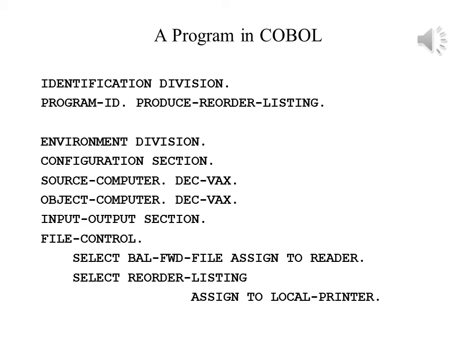The identification division allows the programmer to provide basic identification about the program, its use, its author, and so on. The only required item is the program ID, which contains the name of the program. One might choose to include the author's name, date written, and date compiled, which is actually added to the program listing by the compiler. The environment division allows the user to add pertinent information about the environment — the computer on which it is being compiled and the computer on which it will run, in the configuration section. The input-output section allows the user to specify the files and devices being used, and to specify file organization, access mode, and other information.